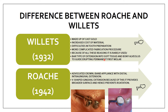In the Willits design, the gingival extension is a bar type. In the Roach design, it is a V-shaped extension. Roach advocated a crown or band appliance with a distal intra-gingival extension. A crown is used when the abutment is deeply carious. The V-shaped extension provides a broader surface and hence prevents rotation.